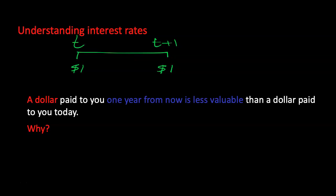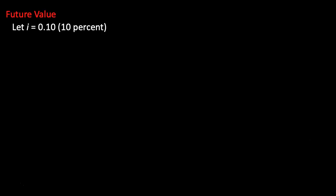Whereas for the dollar promised in the future, you have to wait a whole year to spend it. So we can think of interest rates as our incentive to postpone spending — if I do not spend my money today, I can earn interest on it and spend it in the future.